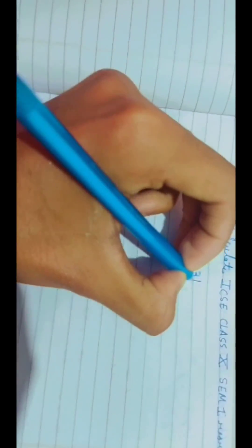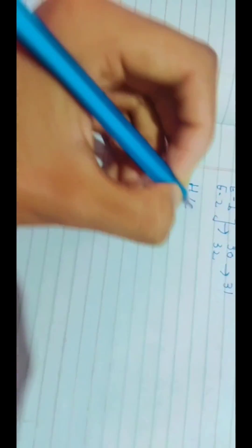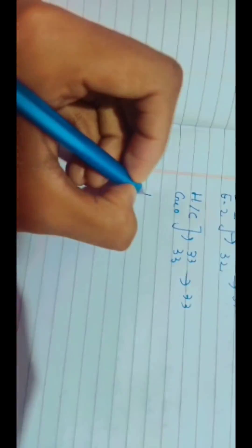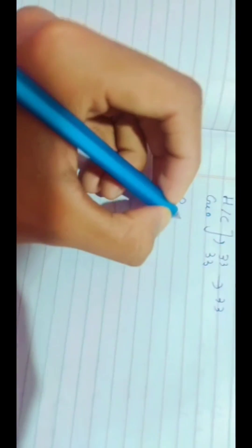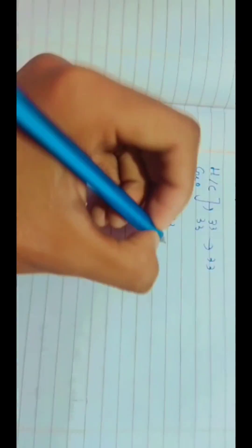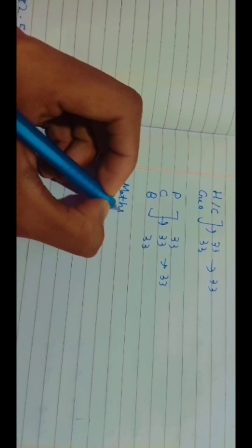Suppose we have taken the average geography, so it's average we can take 33. Physics, chemistry, bio - suppose in all subjects we got 33. And what will the average? 33 in maths 38, and then 36 and computer 38.